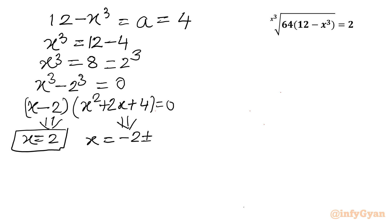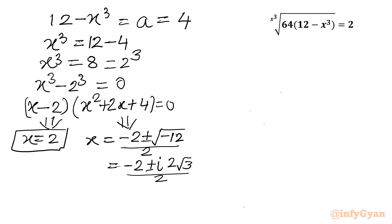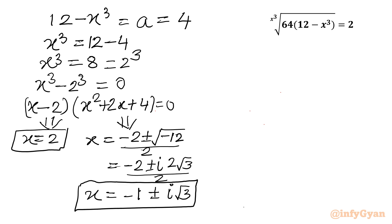From the second bracket x² + 2x + 4 = 0, setting it equal to zero gives two complex solutions using the quadratic formula: x equals (−2 ± √(4 − 16)) / 2, which simplifies to (−2 ± i·2√3) / 2, giving x equals −1 ± i√3. These are complex solutions. Since we are calculating only real solutions, we reject these and accept x equals 2.